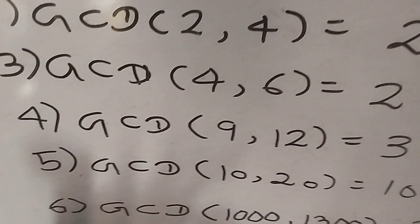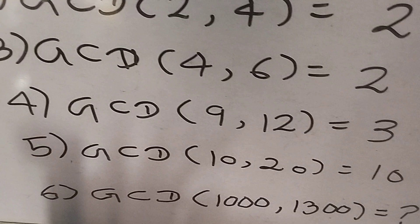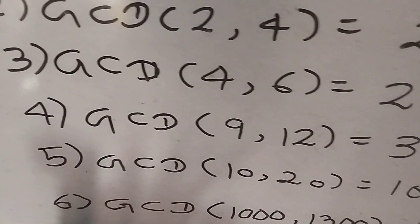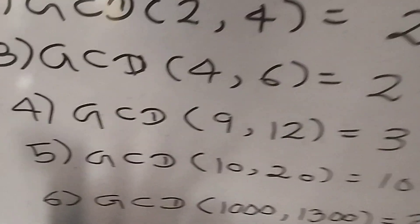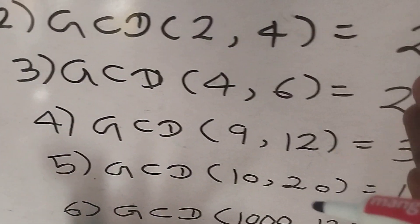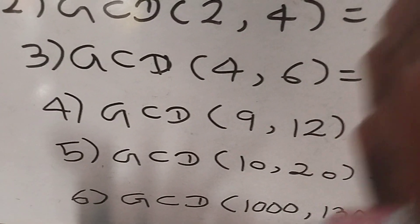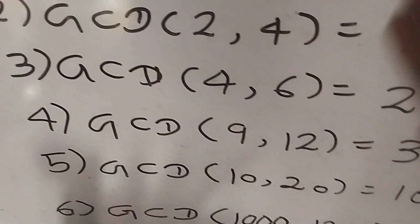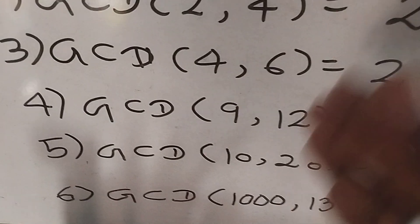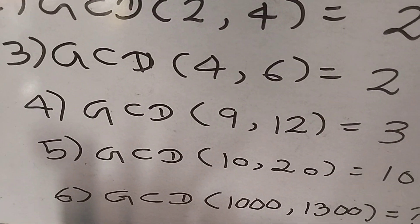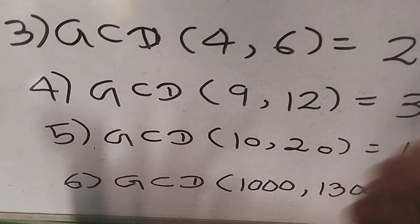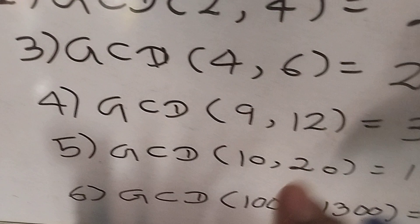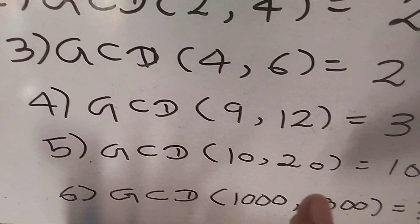We will first go through that trick method and then solve GCD(1000, 1300). I hope you now understand what GCD is and can solve it for small numbers. This trick can be applied to both small and big numbers, but it is specifically useful for large numbers.